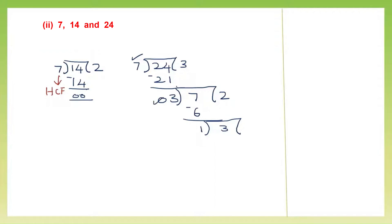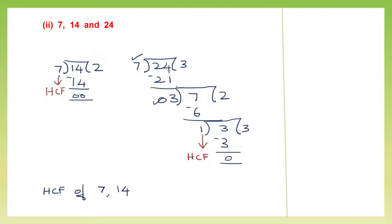Now my divisor is 1. 1 threes are 3, minus; I've got 0. So the last divisor which gave me the remainder 0 is my HCF. So the HCF of 7, 14 and 24 is 1. So the answer is 1.